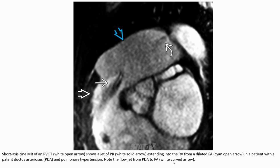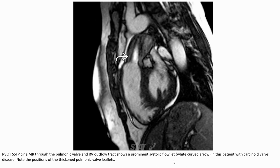This image shows a chart of pulmonary regurgitation extending into the right ventricle from the dilated pulmonary artery. In a patient with a PDA, pulmonary hypertension results in flow from the pulmonary artery. This image shows a prominent main pulmonary artery in a patient with carcinoid valve disease affecting the pulmonary valve.